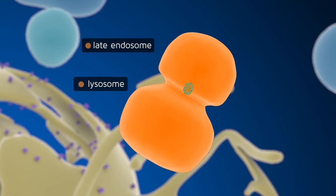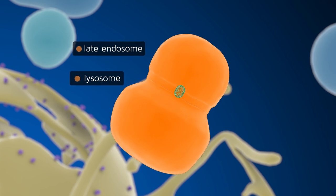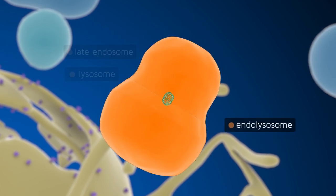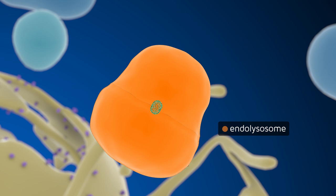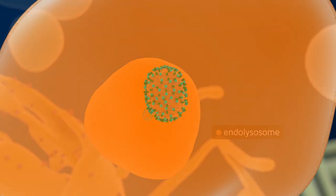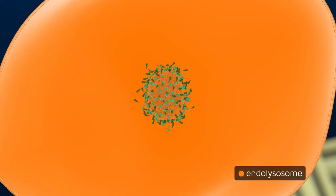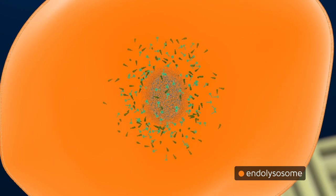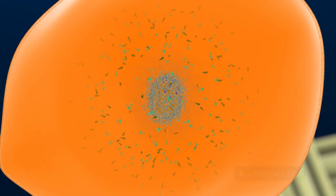The resulting late endosome fuses with the cell lysosome to create an endolysosome. The whole influenza virus is then degraded by the enzymes contained in this new cell compartment. Thus, the fusion inhibitor compound has played its curative role by preventing viral multiplication in the infected organism.